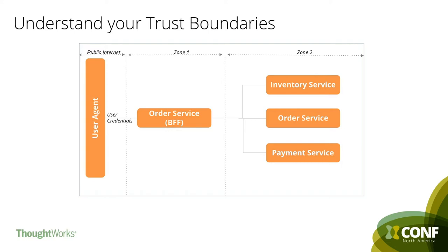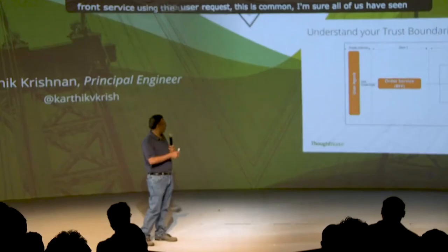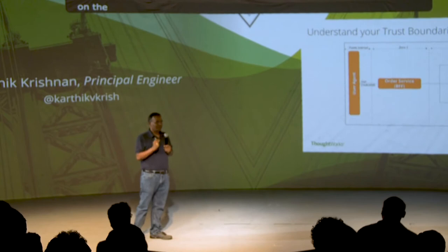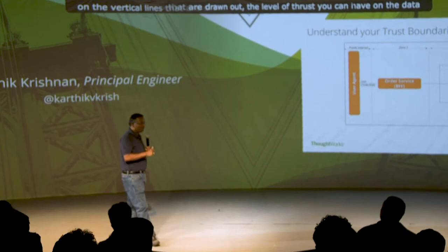I'm going to take a simplified e-commerce example. I'm sure most of us are familiar with this kind of flow diagram. What I've drawn out here is a user agent, a bunch of microservices on the right-hand side, and a BFF — backend for frontend — pattern service fronting the user request. Whenever data travels between the vertical lines drawn out, the level of trust you can have on the data changes.